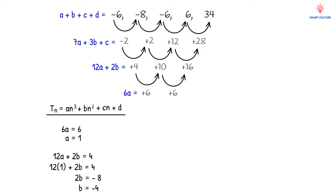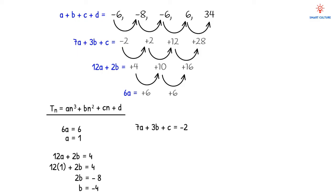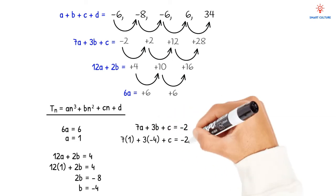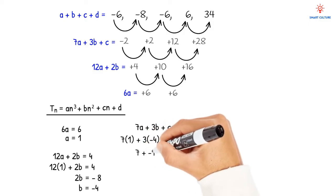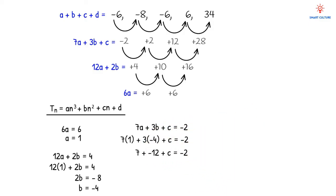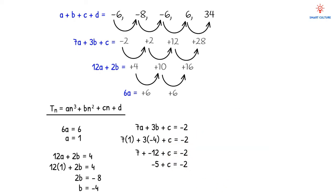Now we have a = 1 and b = -4, so we can solve for c using 7a + 3b + c = -2. Substituting: 7(1) + 3(-4) + c = -2, which gives 7 - 12 + c = -2, so -5 + c = -2. Taking -5 to the other side: c = -2 + 5 = 3.